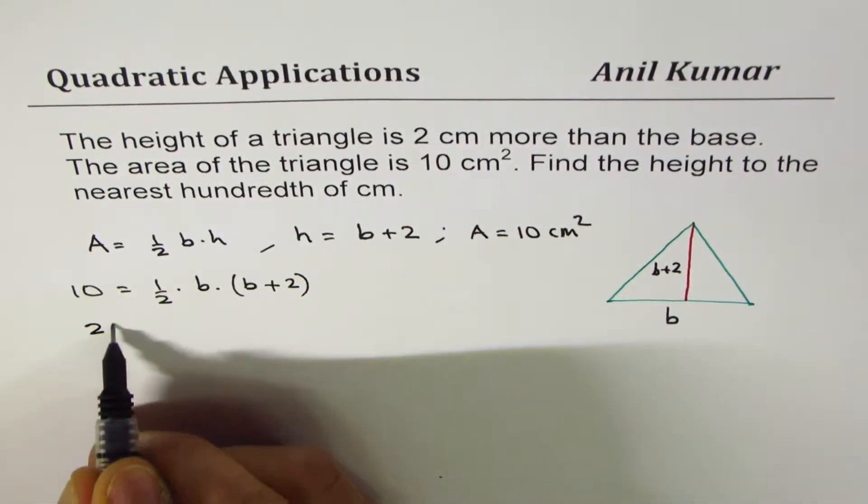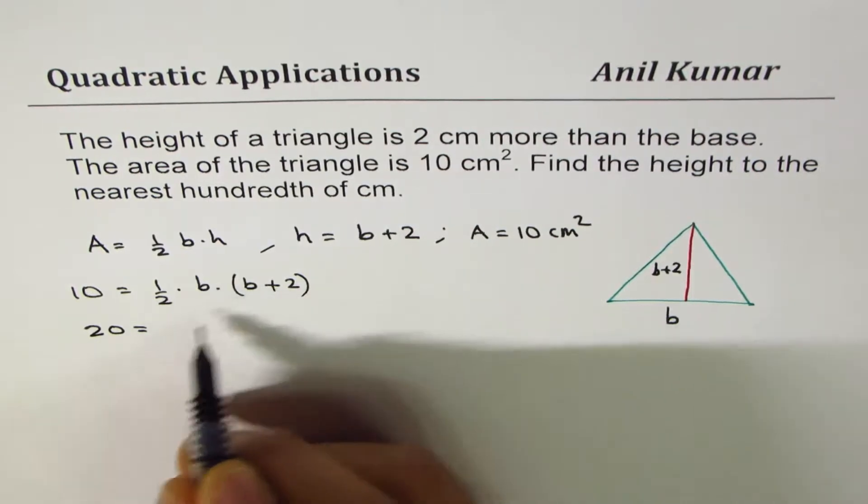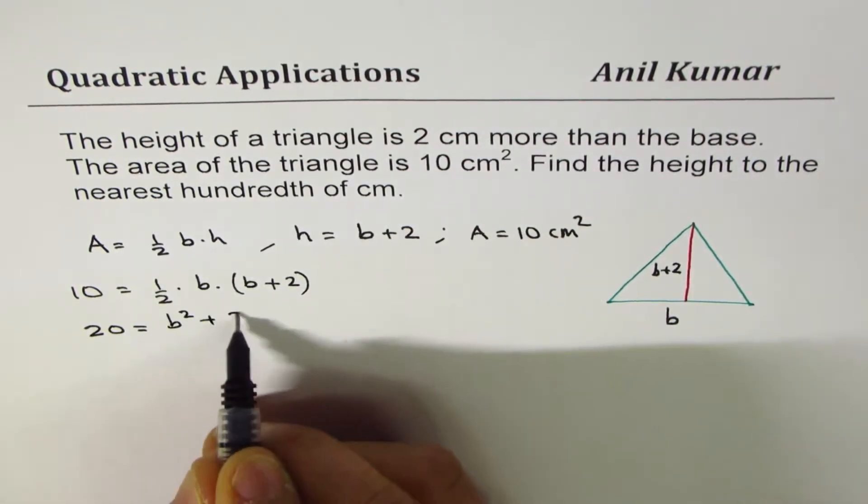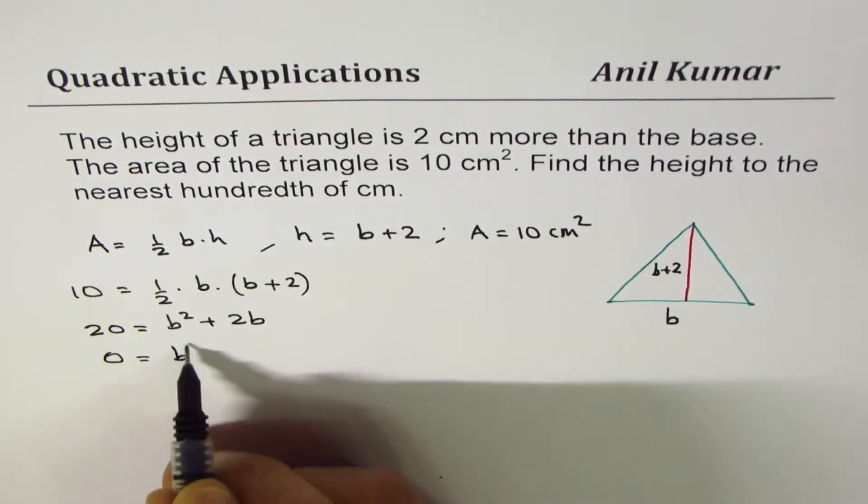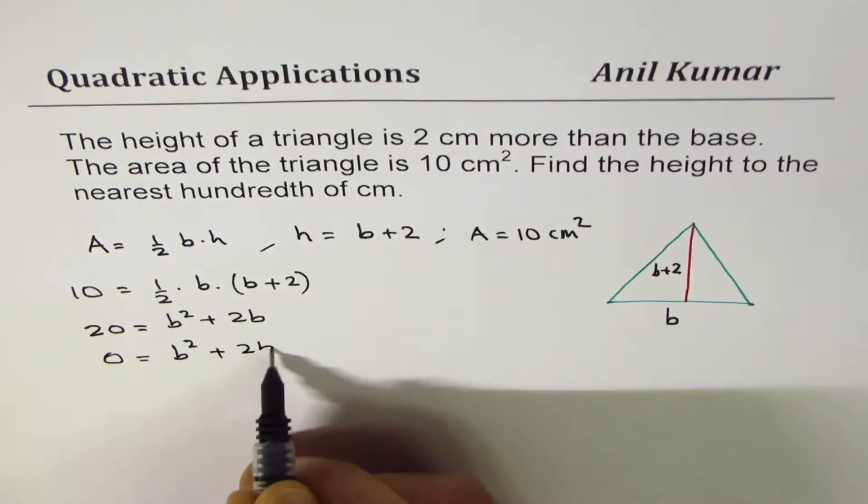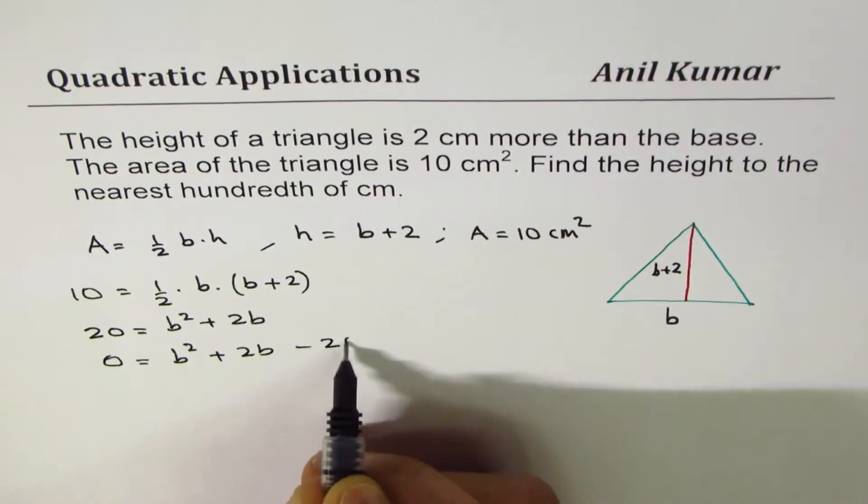We can cross multiply so we get 20 equals open the bracket b square plus 2b. Bring all the terms together: 0 equals b square plus 2b minus 20.